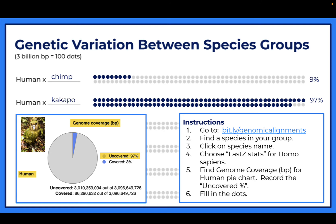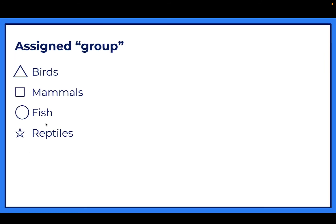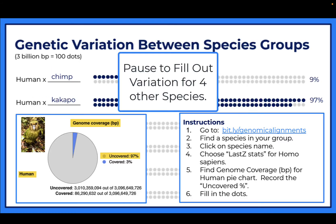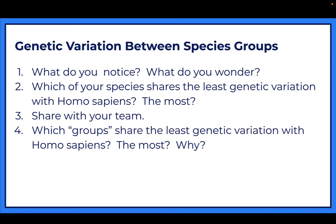You're going to do this for four different organisms: one fish, one reptile, one bird, and one mammal. After you've looked everything up, answer three questions - you can write on the back of your page. What do you notice and wonder? Which of your species shares the least genetic variation with Homo sapiens, and which shares the most? Which groups share the least and the most genetic variation with Homo sapiens?